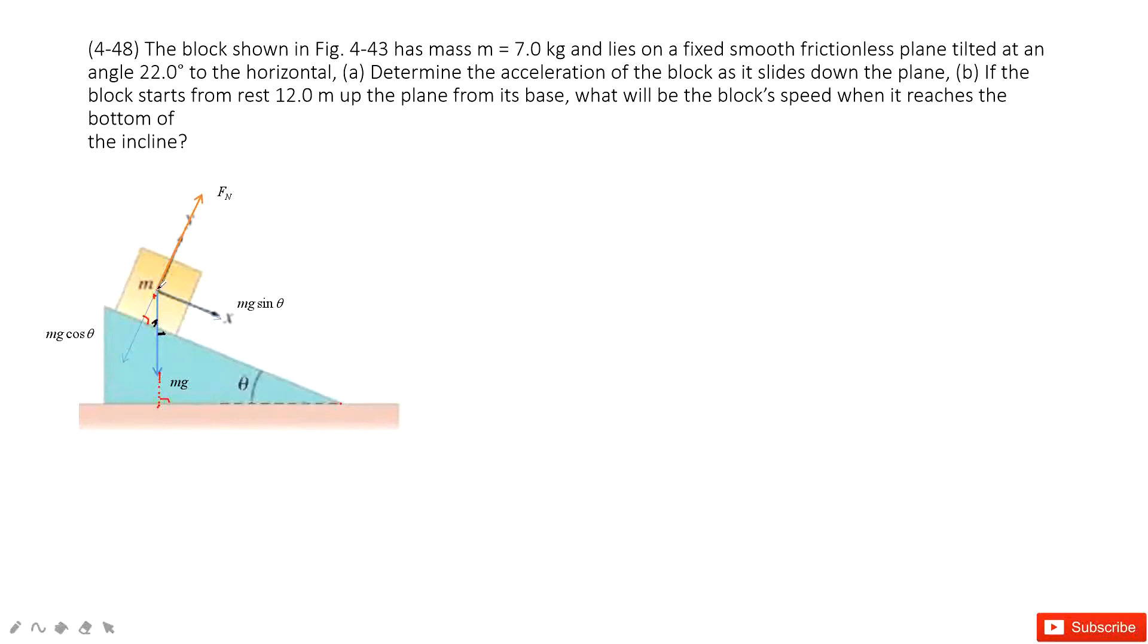Therefore we can say this angle is theta. After you know this angle is theta, you can see this is the gravity mg. So projected in the y, the adjacent side is mg cosine theta. This side is mg sine theta.